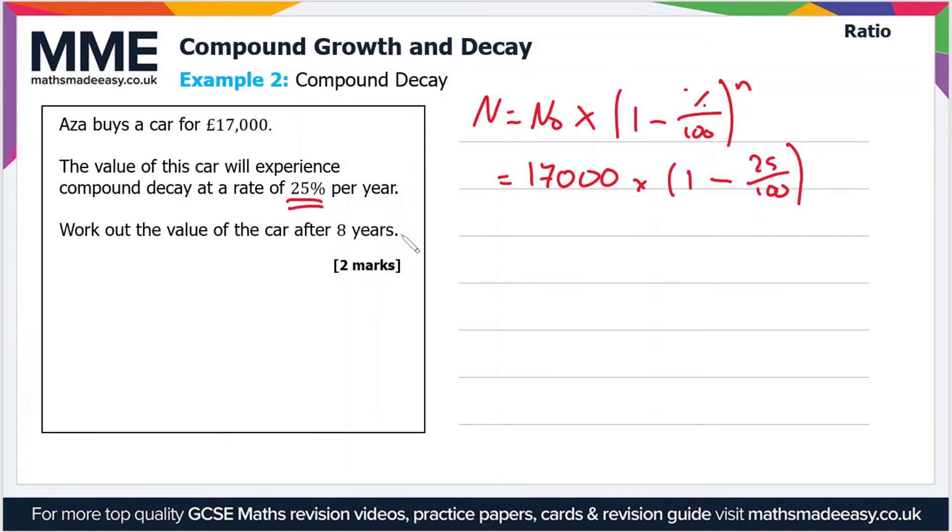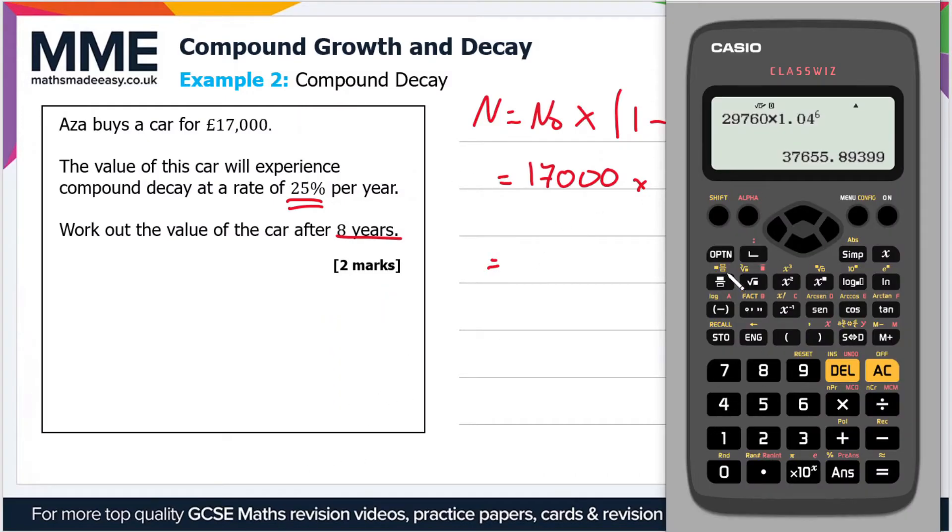So let's just put all that straight into the calculator. So 17,000 times 1 minus 25 divided by 100 to the power of 8. So £1,701.92. So that is the value of the car after eight years.